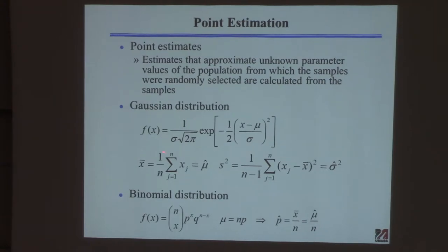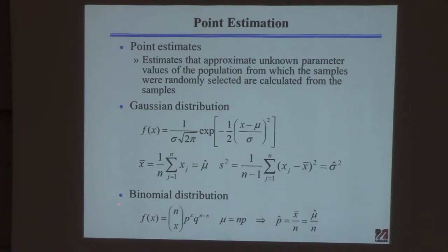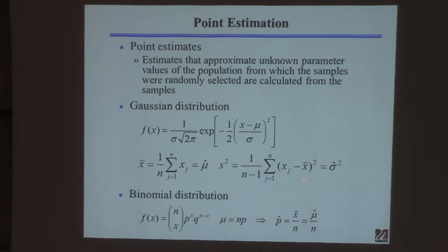Here's an example of what I mean by point estimation. For a Gaussian distribution, the probability function is completely characterized by a mean and a standard deviation — the true mean and true standard deviation. The idea of point estimation is we take a number of samples, calculate the mean, and that's an estimate. If you ever see something called 'something hat,' that means estimate of that. So mu hat means an estimate of mu. This is how we estimate mu: we take a number of samples, compute the mean, and that's considered our estimate of it. Same thing with the variance — the sample variance s-squared is our best estimate of the true variance.